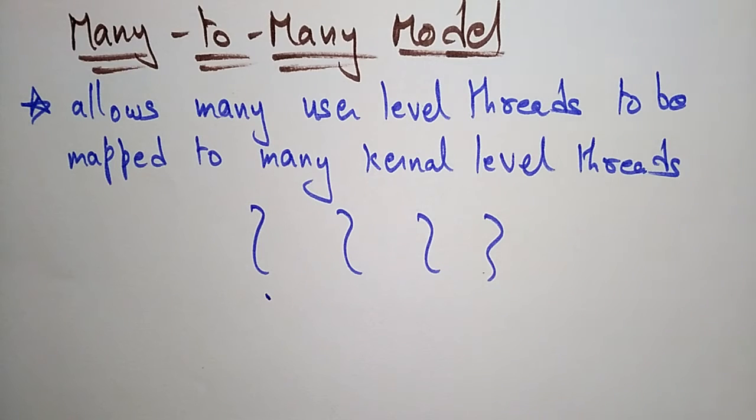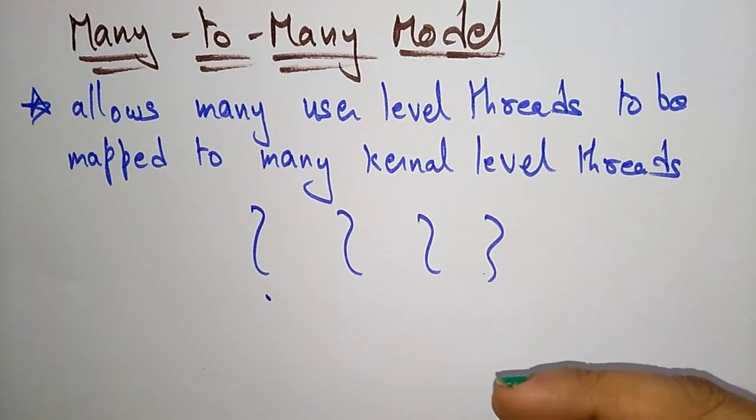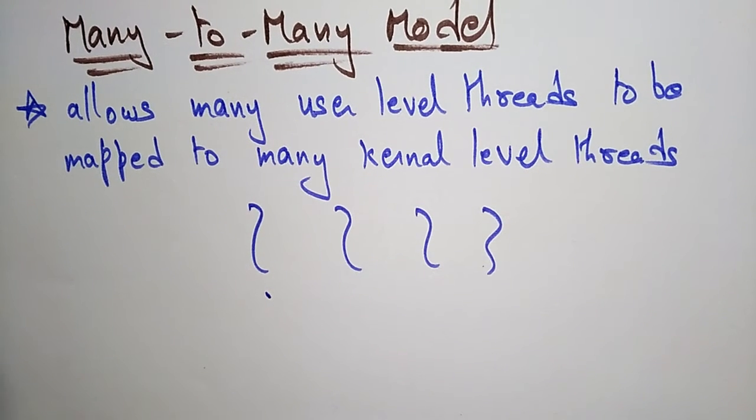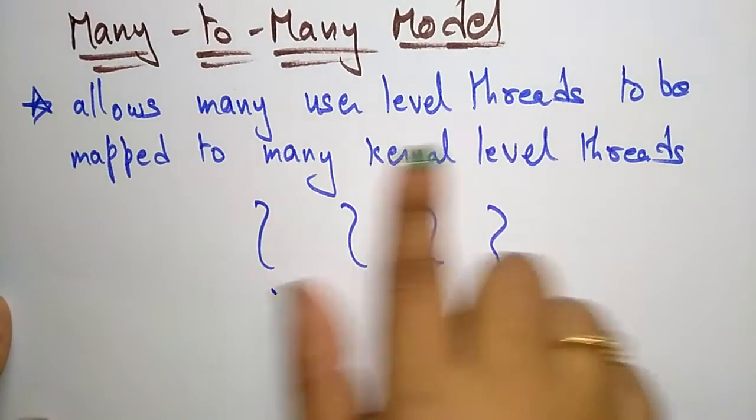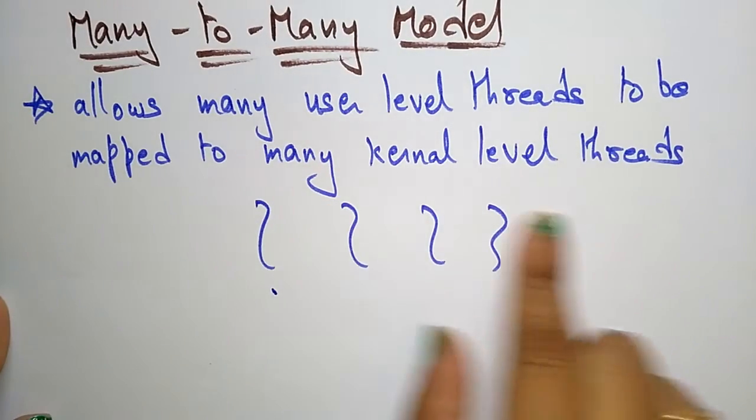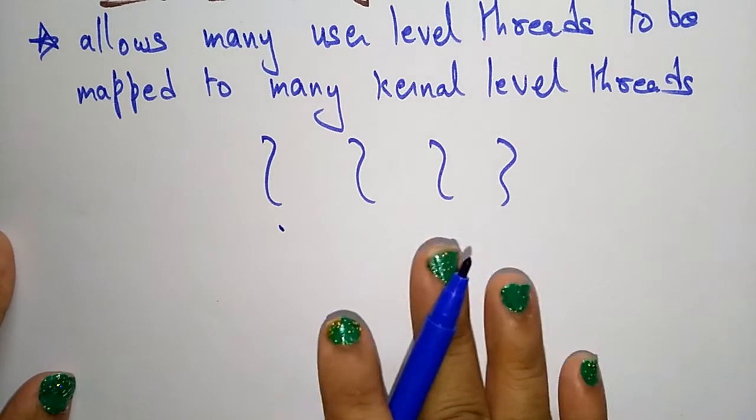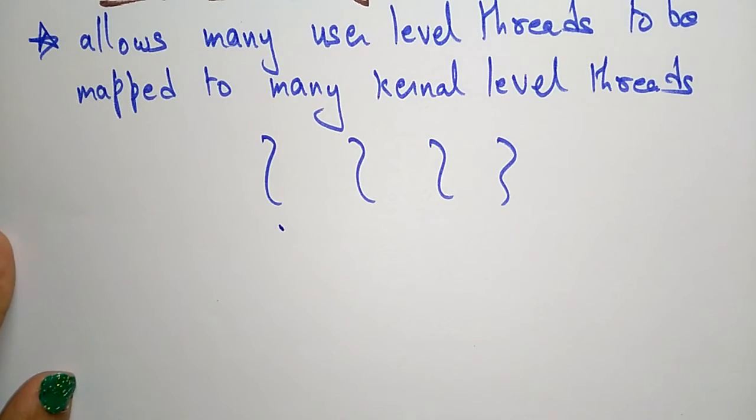The many-to-many model means from user level you are having many threads, and in the same way at kernel level you are having many threads. It allows many user level threads to be mapped to many kernel level threads.